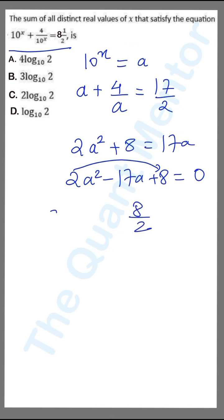Or 8 by 2. So if the roots are a1 and a2, the product of these roots is basically 8 by 2, which is 4. If I resubstitute a as 10 raised to x, the first root a is 10 raised to x1.